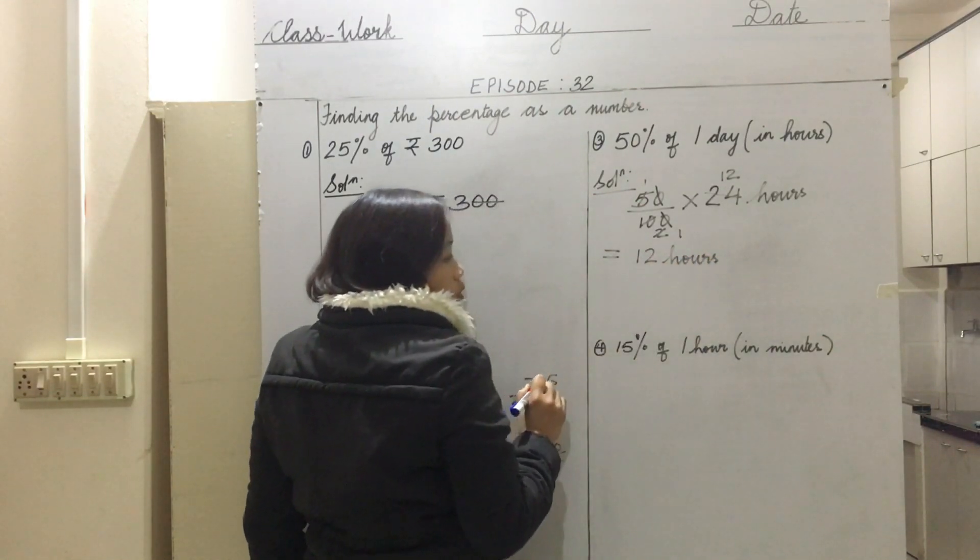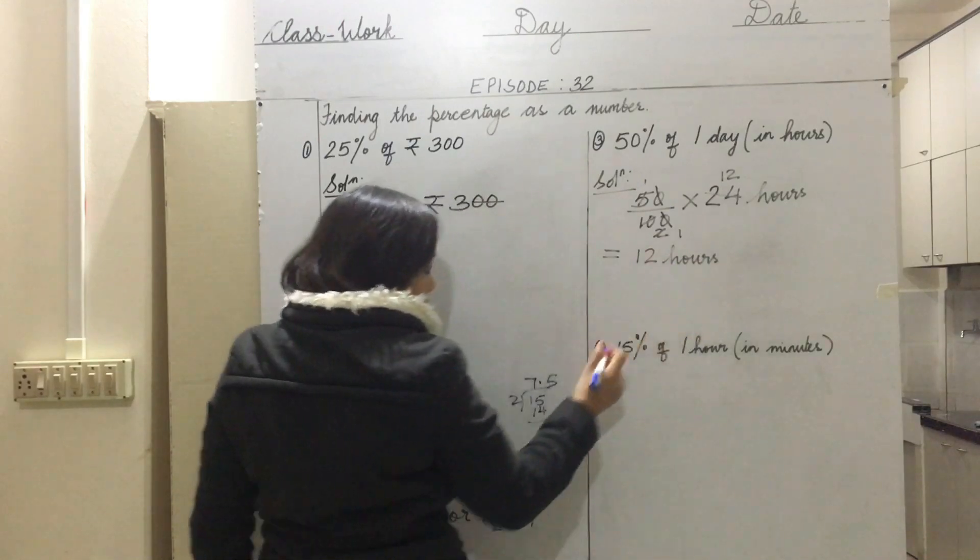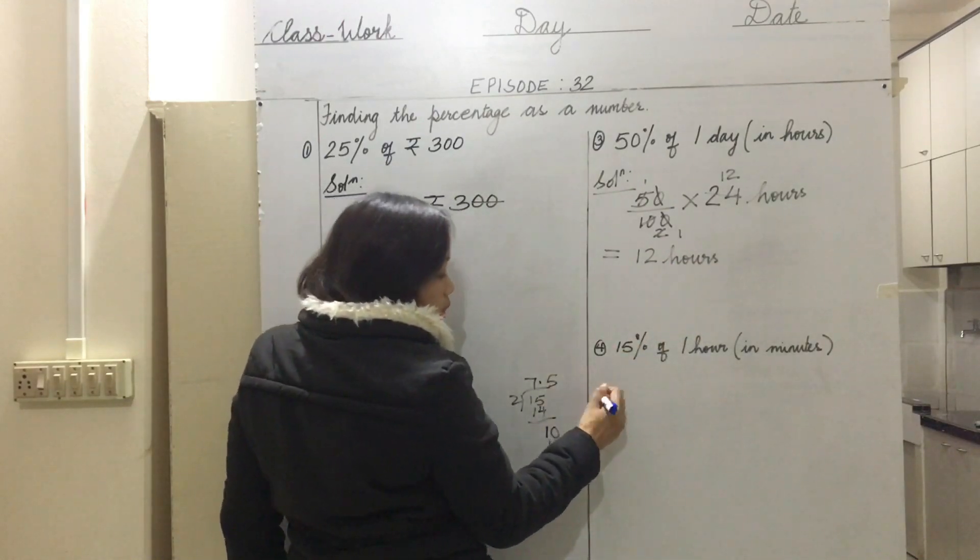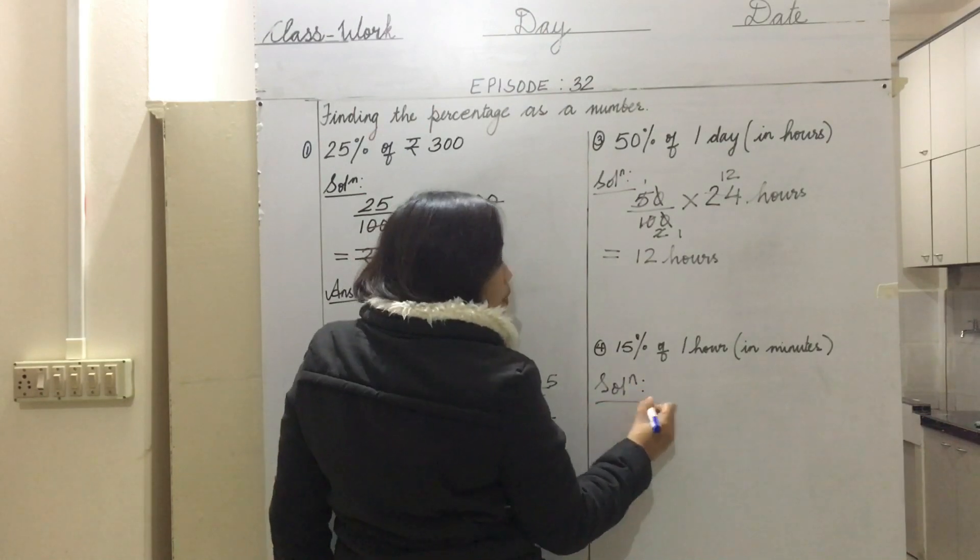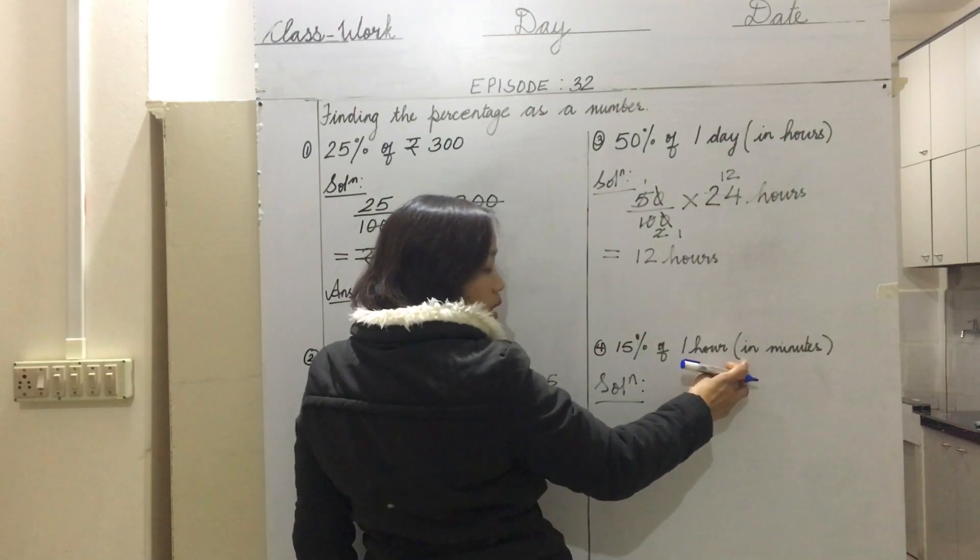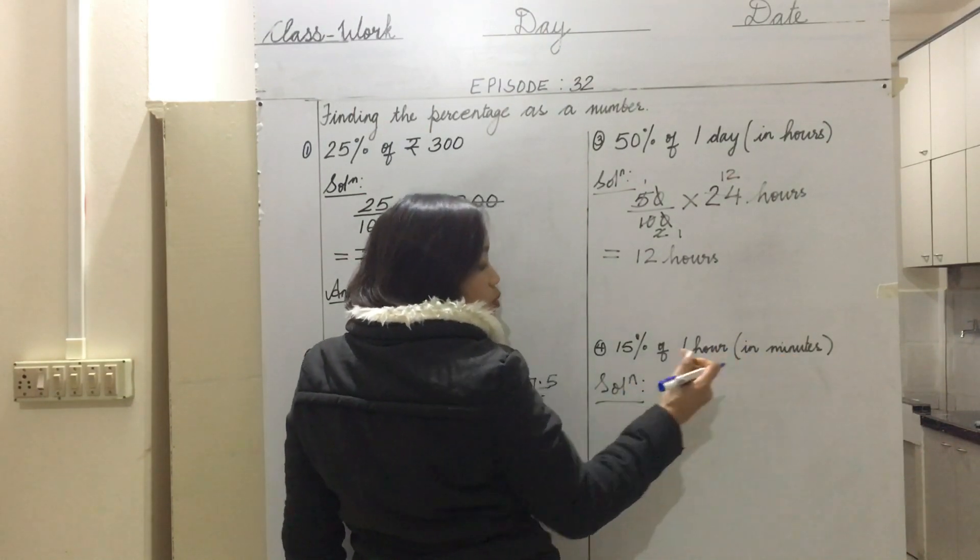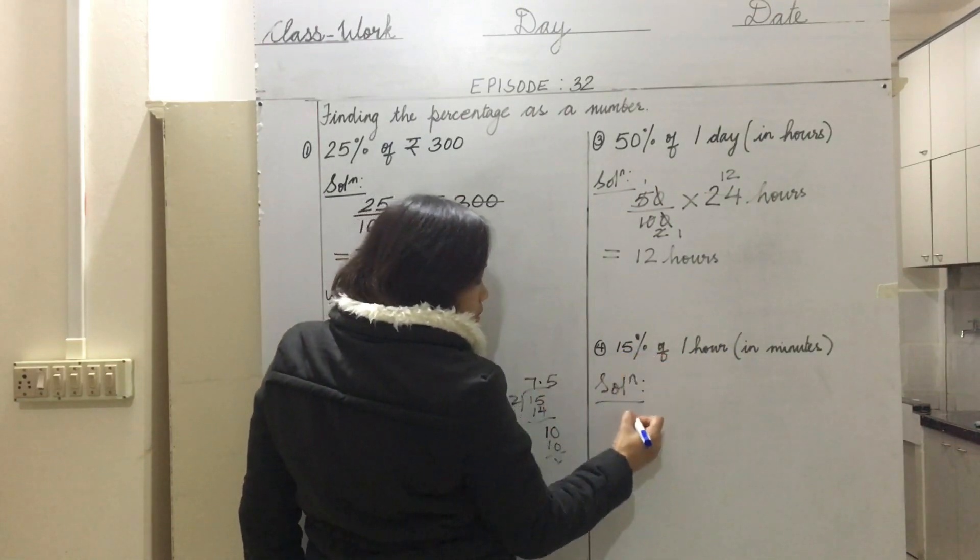Next we have 15 percent of one hour. In brackets we have 'in minutes' - that means we need to calculate in minutes. 15 percent means 15 out of 100, of multiply.